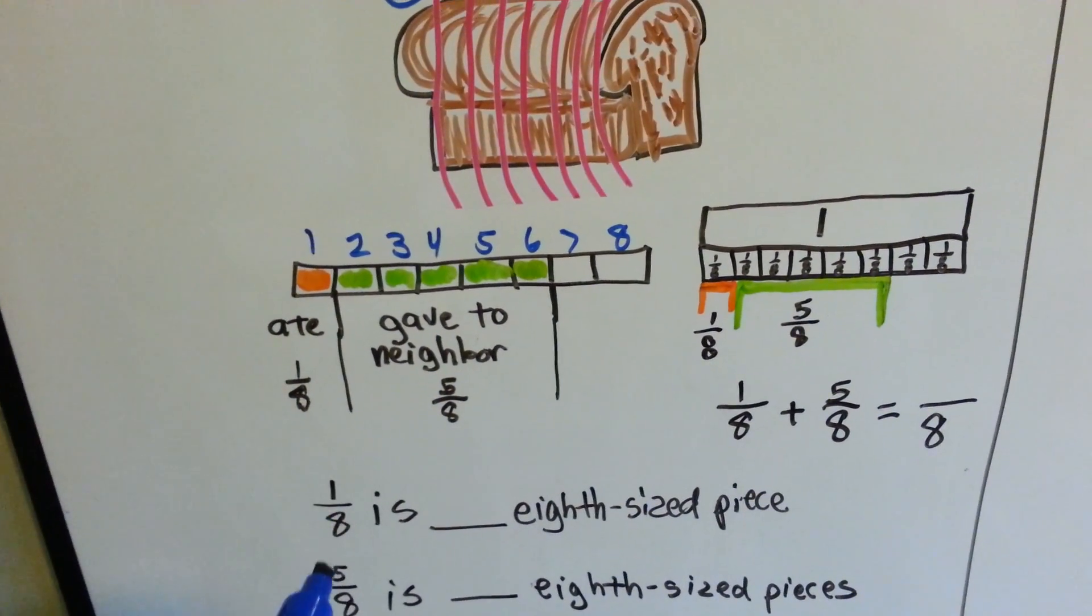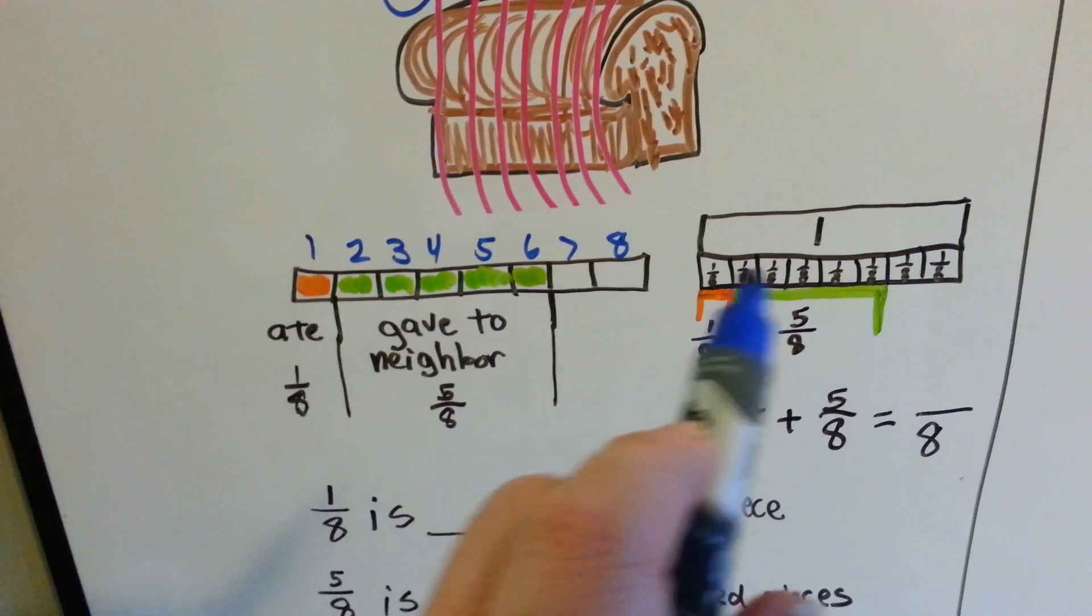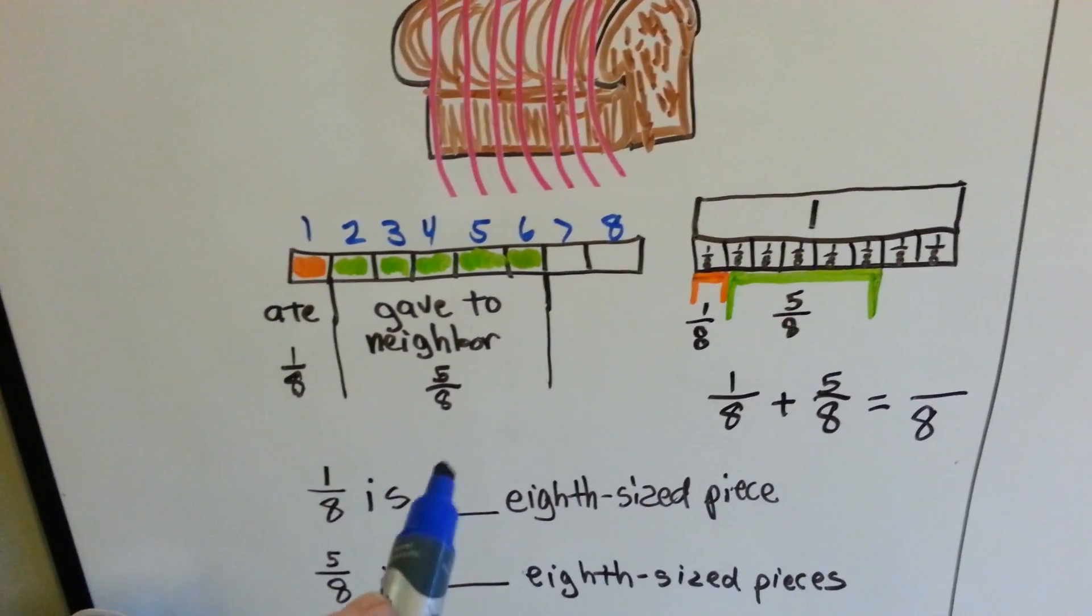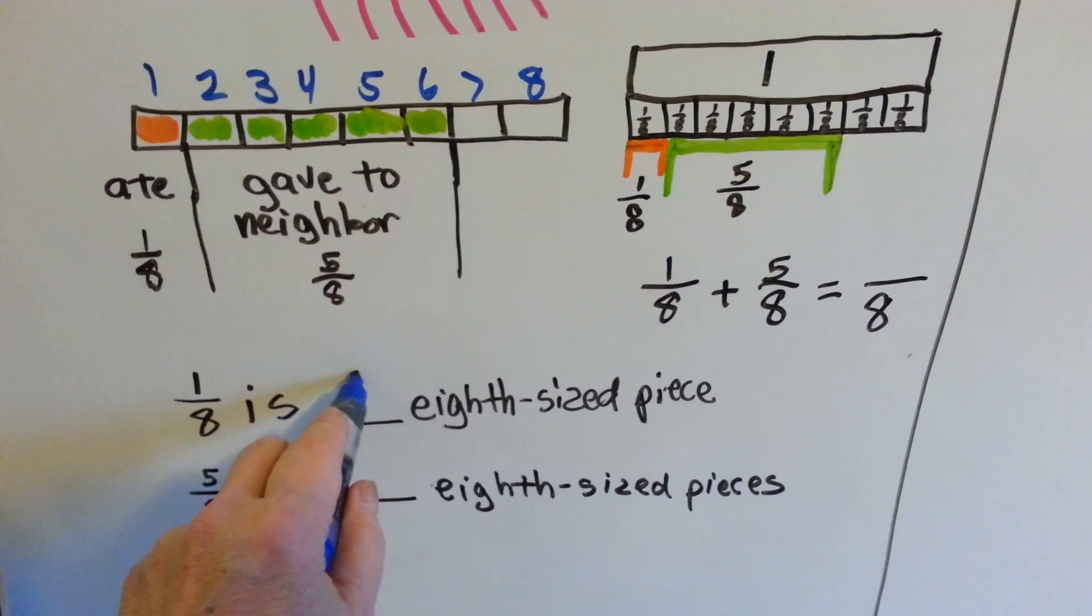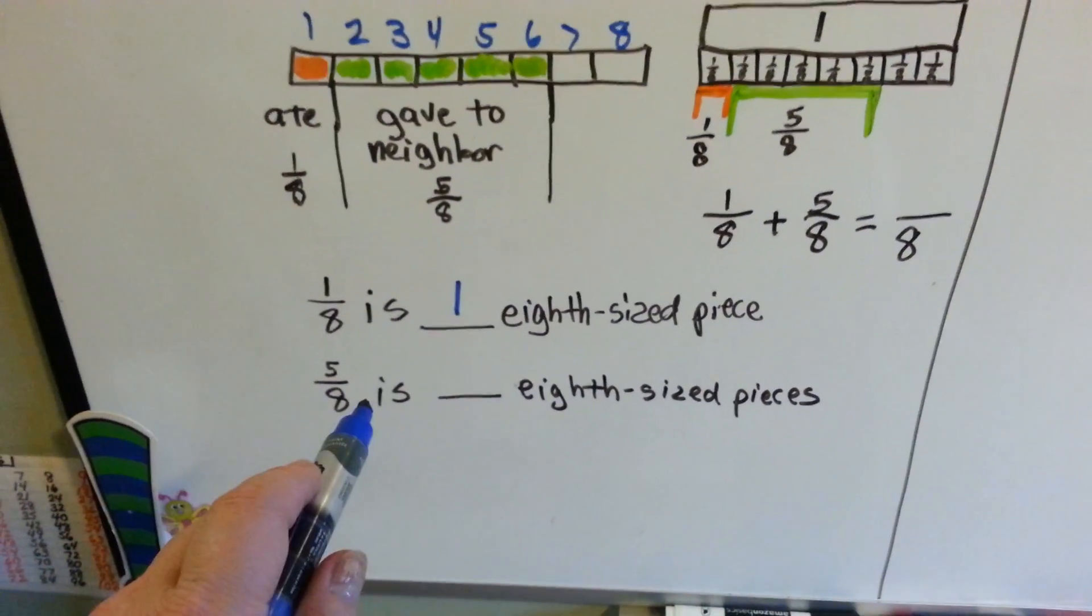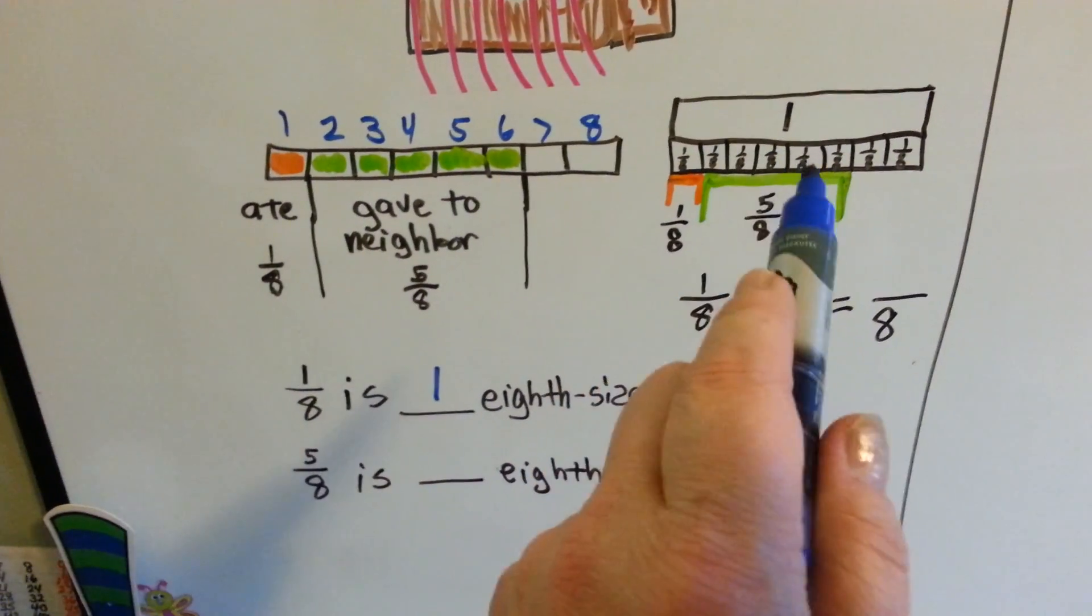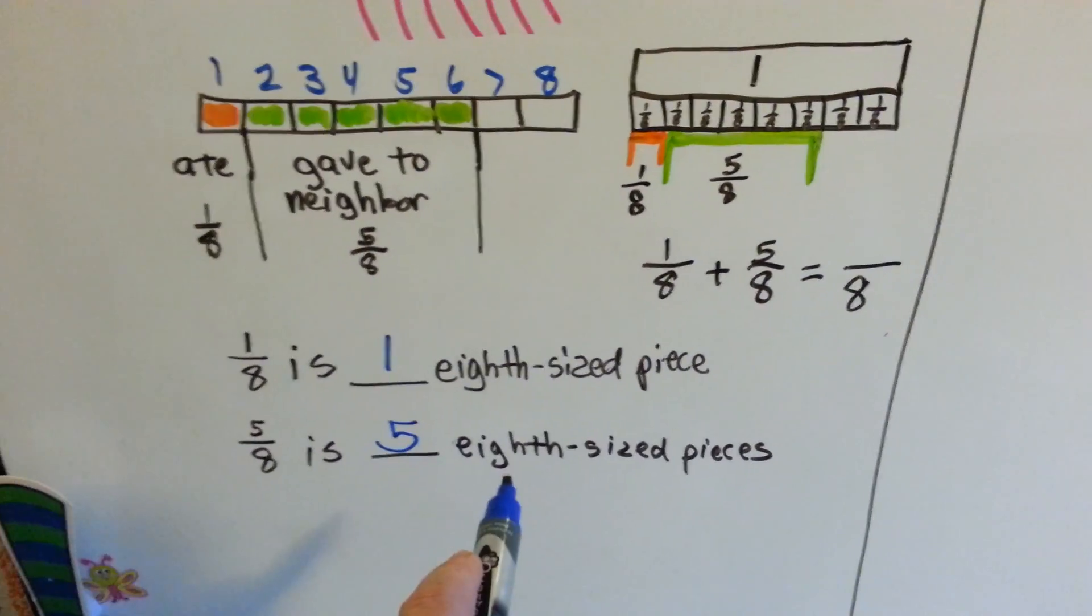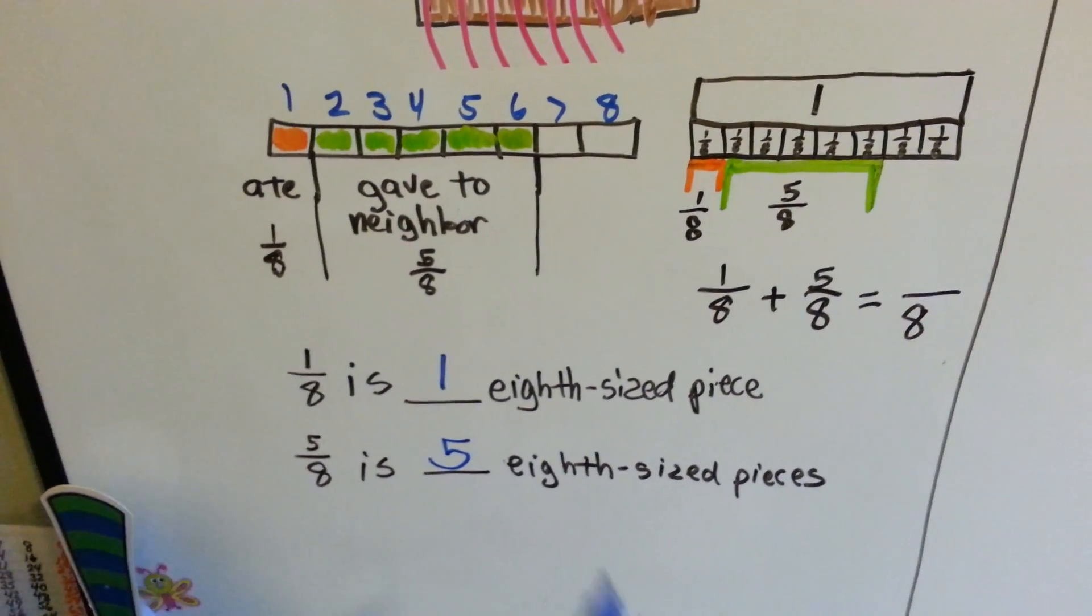1 eighth of the banana bread is how many slices? It's a 1 eighth size. 5 eighths is how many of these slices? 5. And they're each sliced in the size of an eighth.